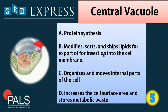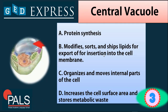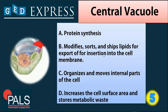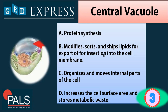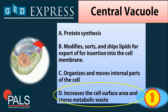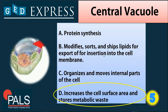Next question: the central vacuole is for what? A. Protein synthesis, B. Modifies, sorts, and shapes lipids for export or insertion into the cell membrane, C. Organizes and moves internal parts of the cell, or D. Increases the cell surface area and stores metabolic waste. The answer is D — increasing surface area within the cell and storing metabolic waste, which is the main function of the central vacuole in plant cells.